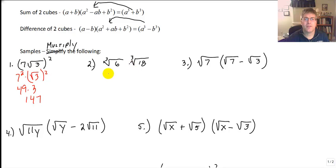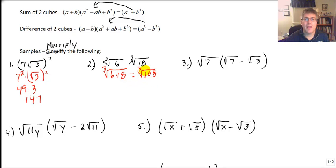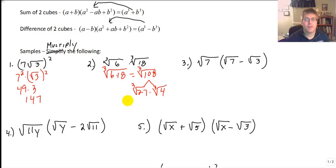The cube root of 6 times the cube root of 18: using our product rule, 6 times 18 gives us the cube root of 108. Looking for perfect cube factors of 108, we split it into the cube root of 27 times the cube root of 4. Since 27 is a perfect cube, our final answer is 3 times the cube root of 4.